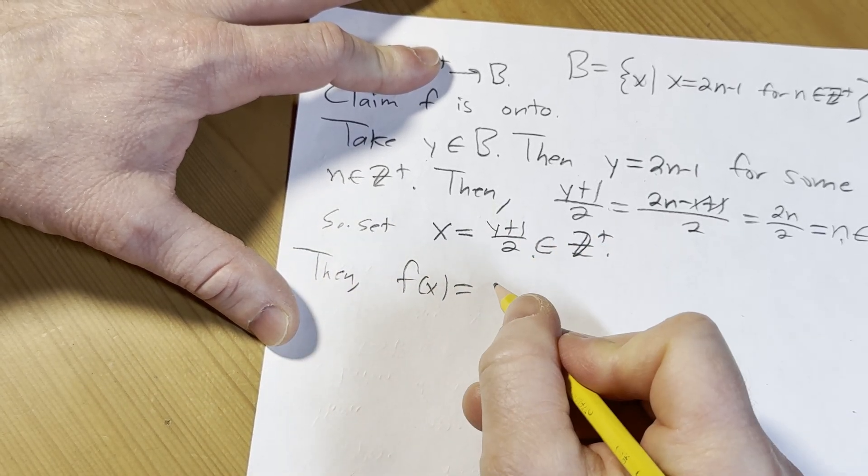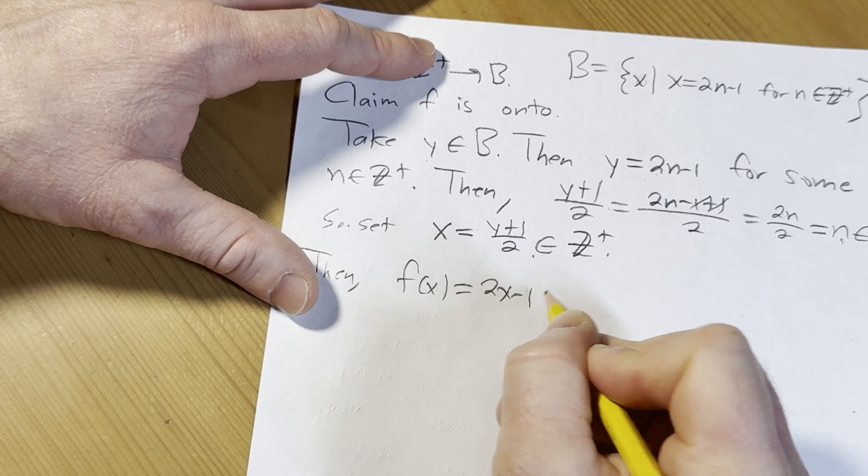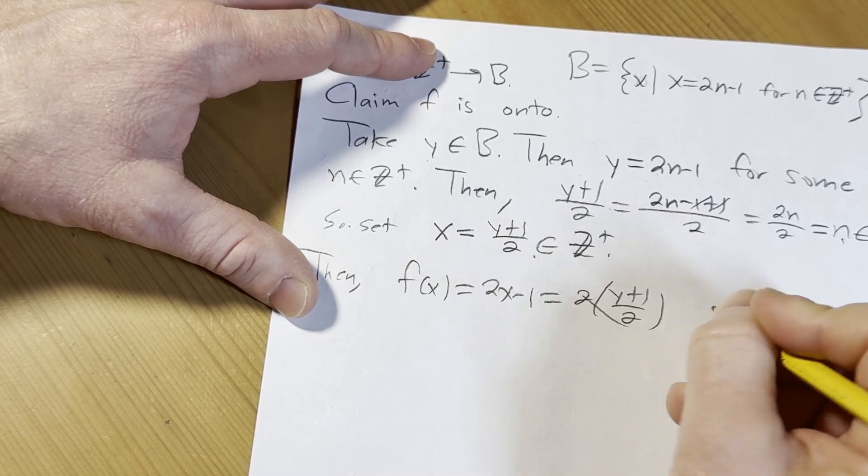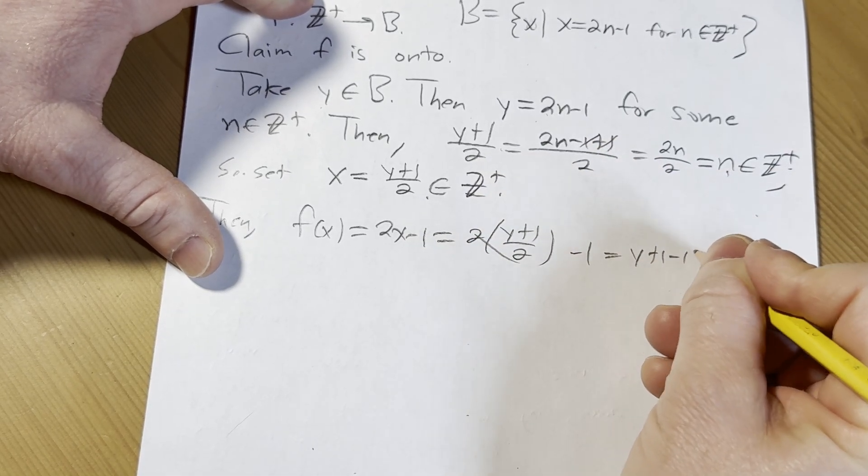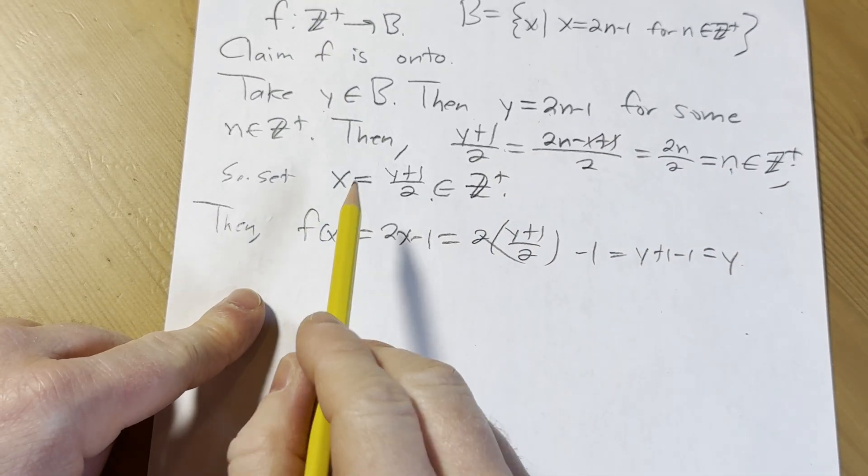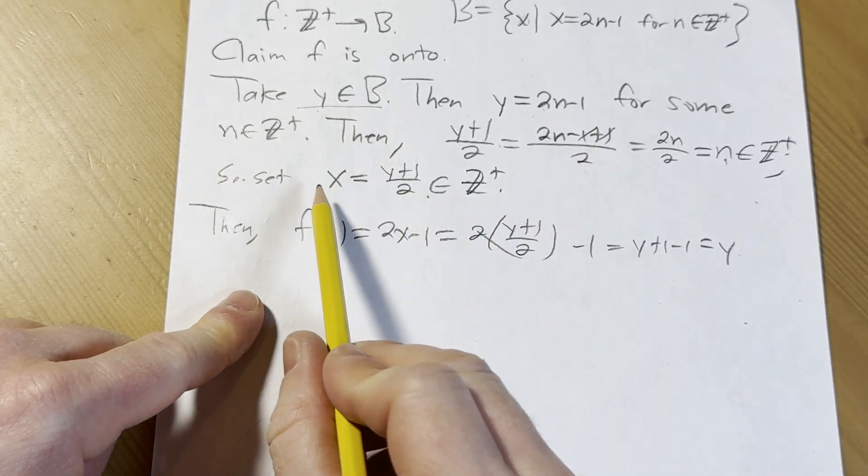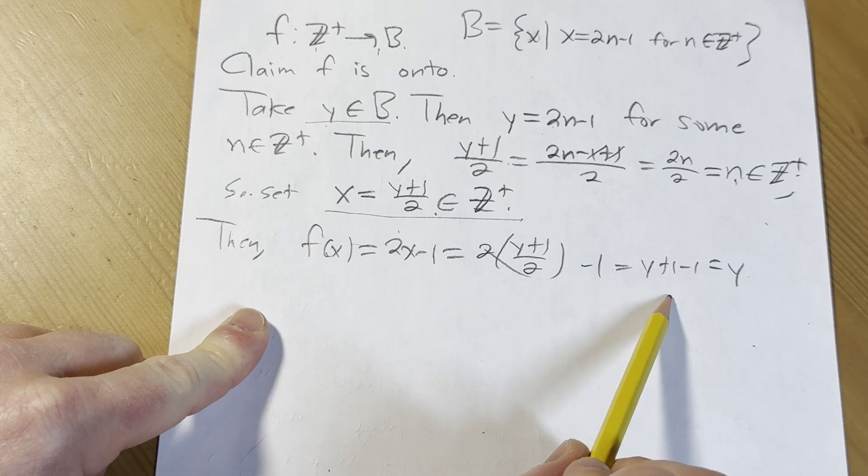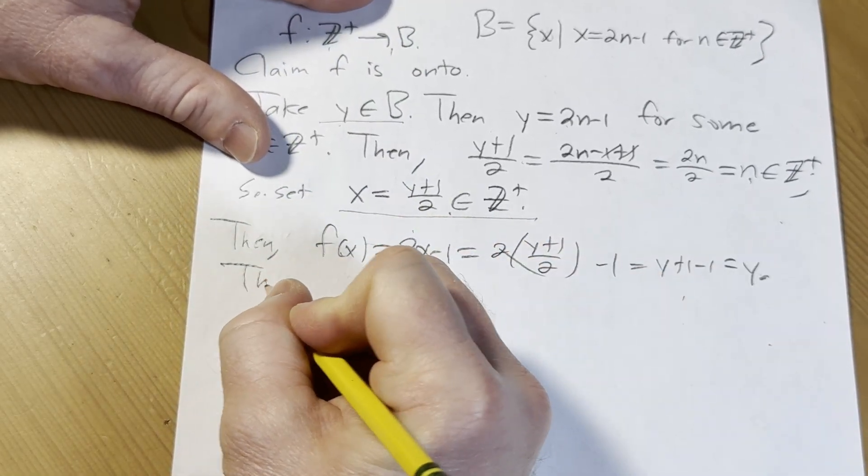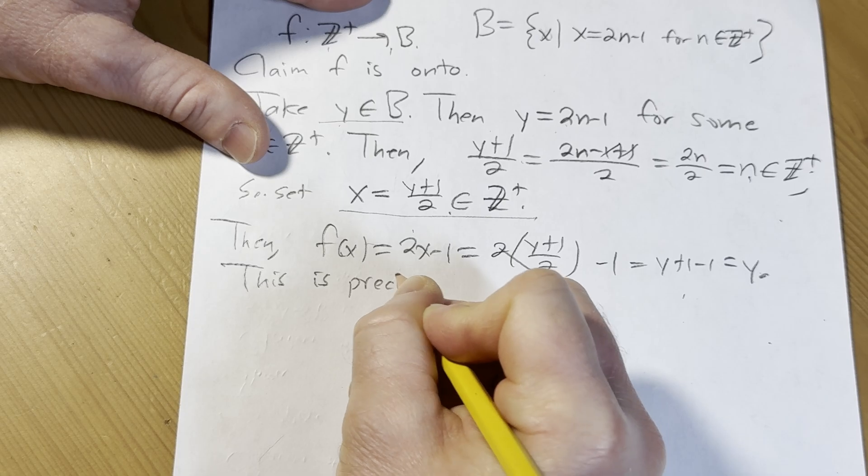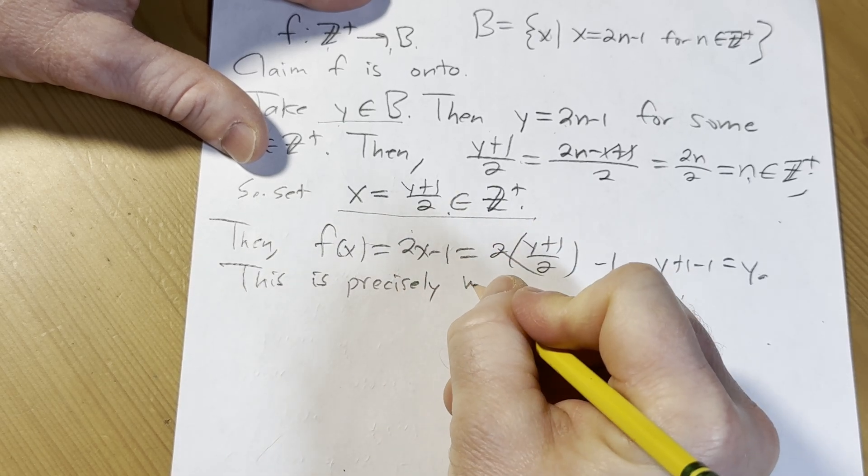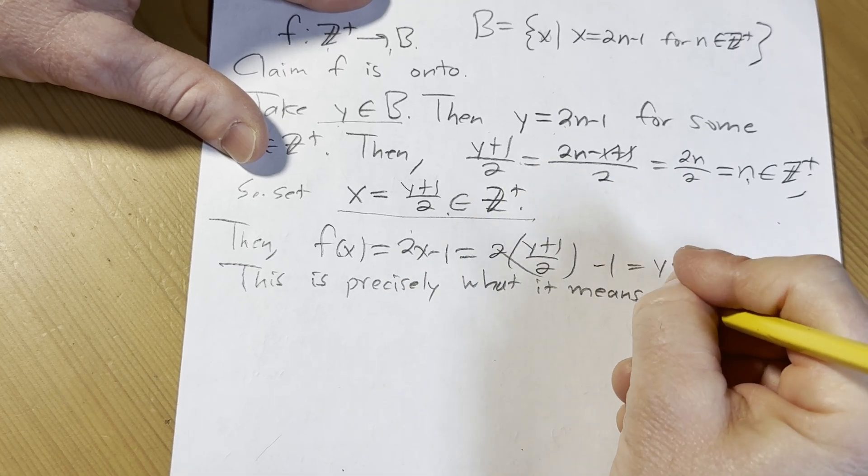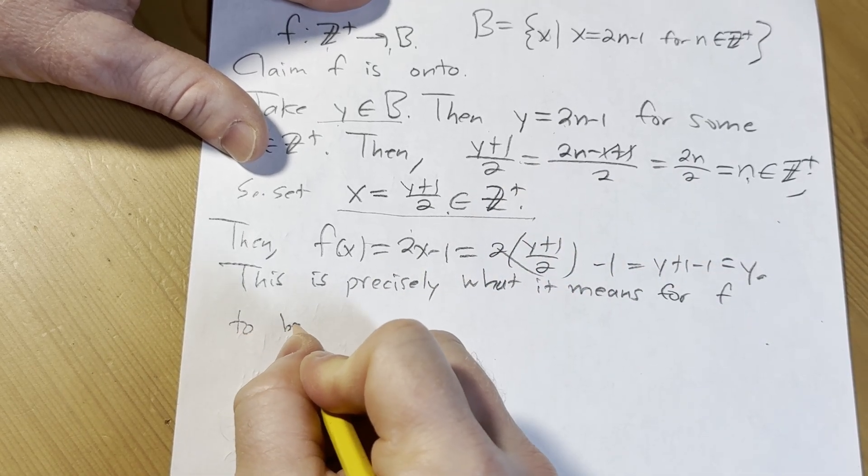Then f of x is equal to 2x minus 1, which is equal to 2 times y plus 1 over 2 minus 1, which is equal to y plus 1 minus 1, which is equal to y. So given y in B, we found an x in Z plus such that f of x is equal to y. This is precisely what it means. This is much better than what we had earlier for f to be onto.